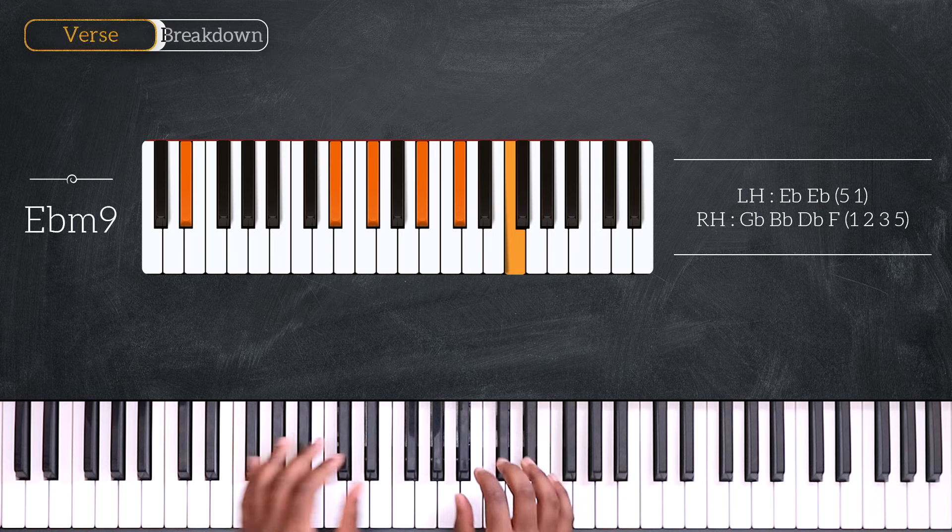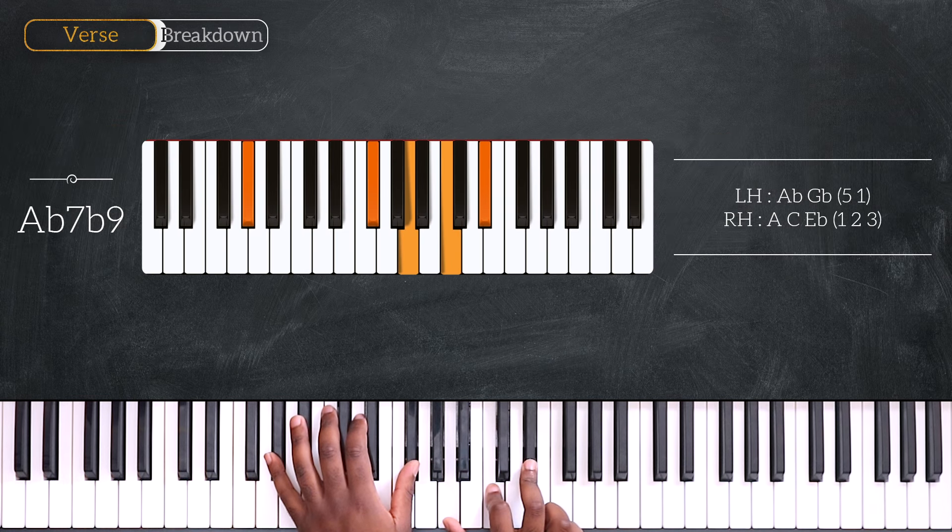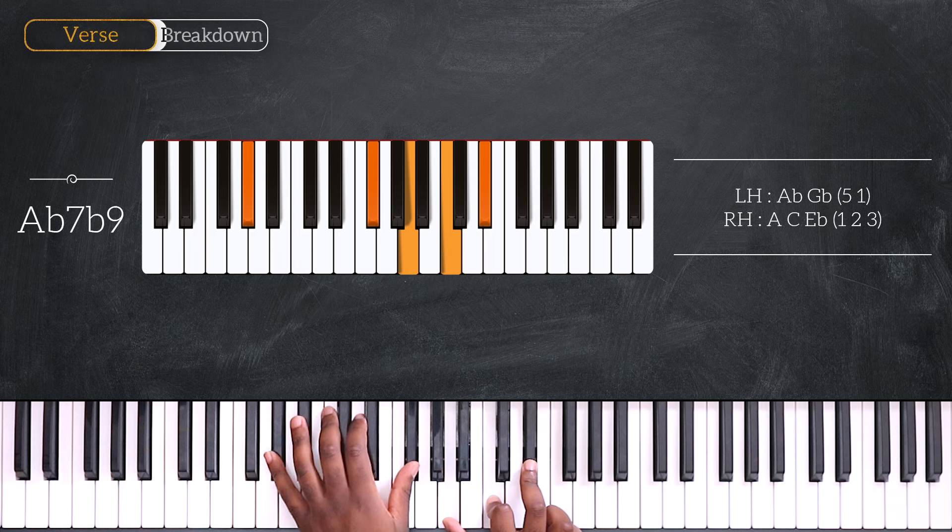And coming at the end of the chord progression, we're playing Ab7, Bb9. Ab and Gb, A, C and Eb.